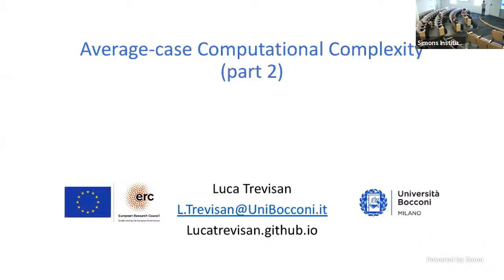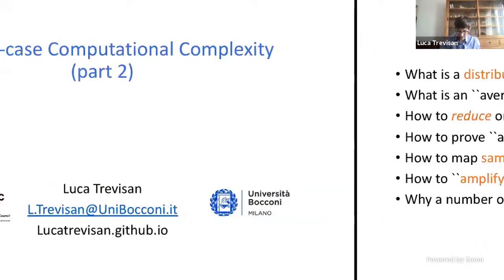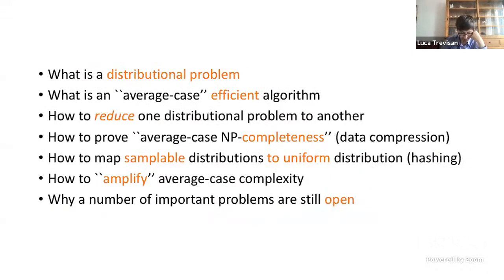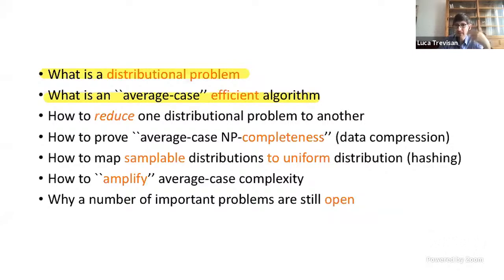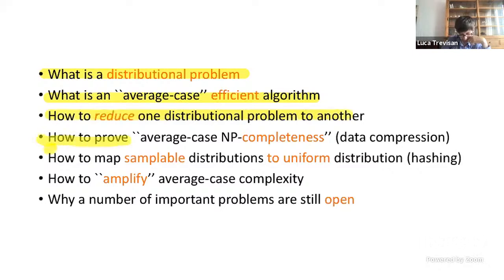We're delighted to have Luca come back for part two of average case complexity. So let's see how much progress we made since yesterday. We talked about what is a distributional problem, various definitions of efficiency for algorithms, and how to get reductions between problems that preserve average case tractability. We got an example of NP-completeness with respect to this kind of reduction that used data compression in a fundamental way.